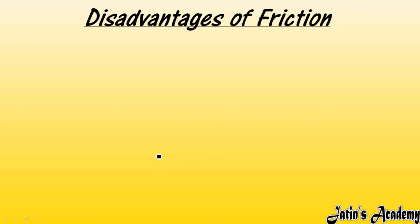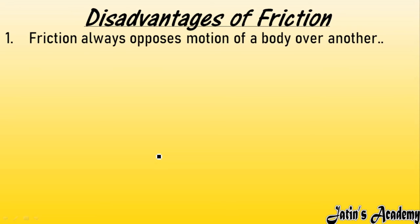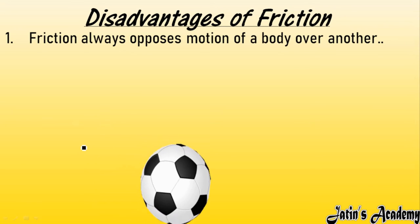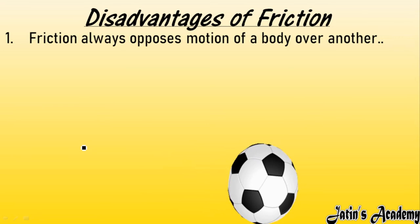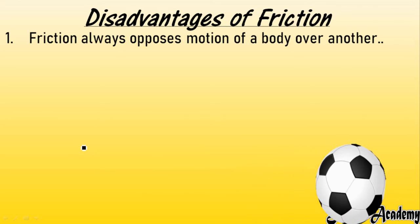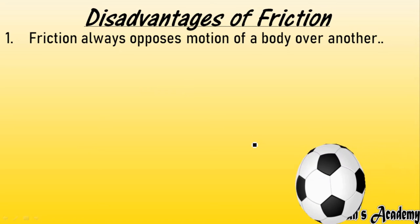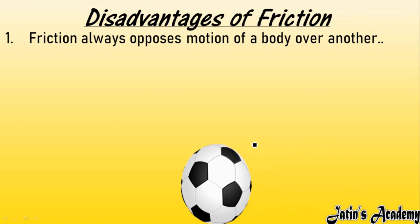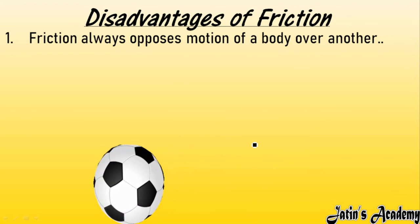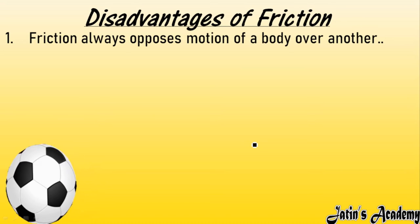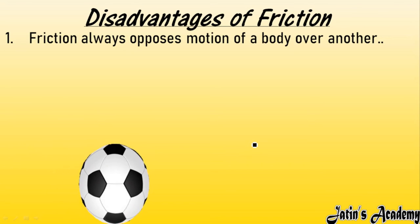Just as friction has advantages, it also has disadvantages. First disadvantage: friction always opposes the motion of a body over another. It is impossible for a ball to roll forever because friction always slows down the motion whenever two objects are in contact with each other — due to interlocking, motion is always slowed down.